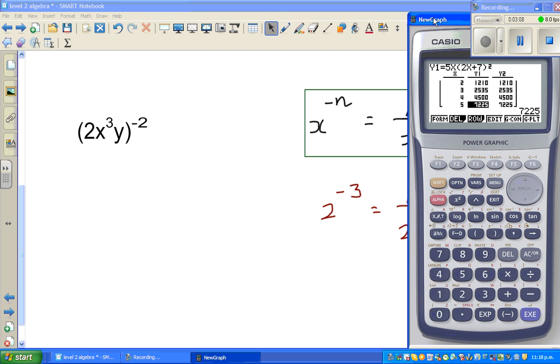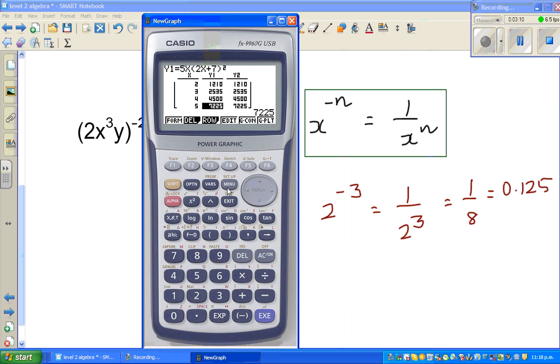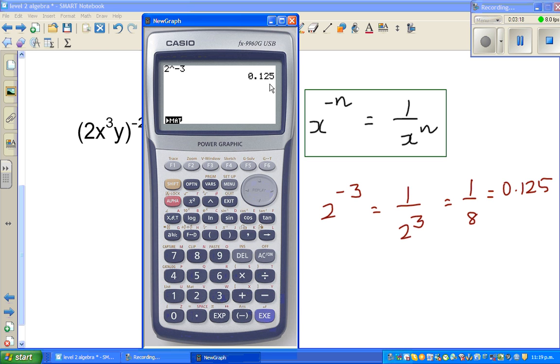So if you go menu run 2 raise to minus 3 equal 0.125. Okay and that's how they do or you can go 1 divided by 2 raise to 3 is the same thing or 1 divided by 8 is also the same thing.